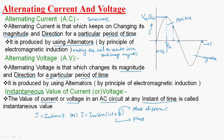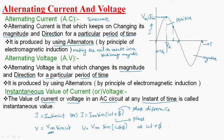Similarly, we can represent the alternating nature of voltage as V = Vm sin(ωt), where Vm is the maximum value of voltage. Or we can write V = Vm sin(ωt + φ), where ωt + φ is the phase and φ is the phase difference.